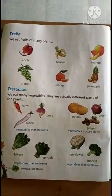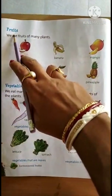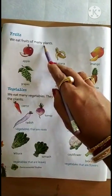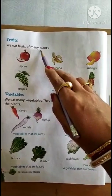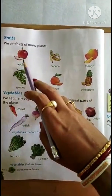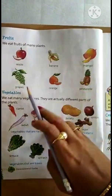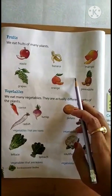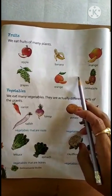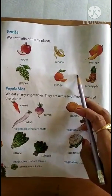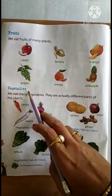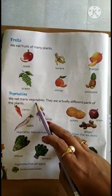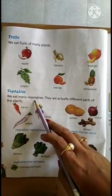Next topic: Fruits. We eat fruits of many plants. Some plants give us fruits and we eat them. Here some pictures are given - apple, banana, mango, grapes, orange, pineapple. These are some common fruits we get from plants. Next: Vegetables. We eat many vegetables every day in our lunch and dinner.